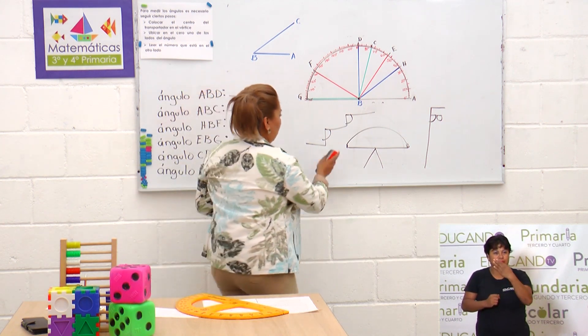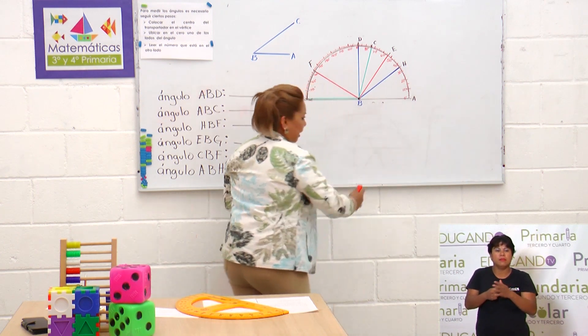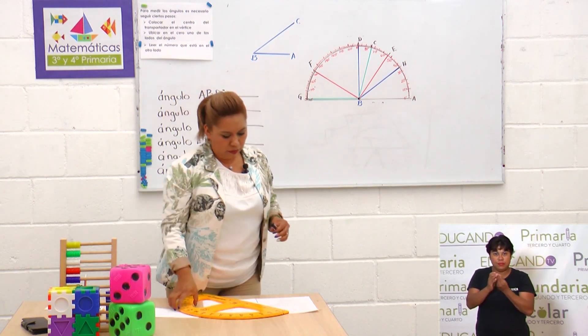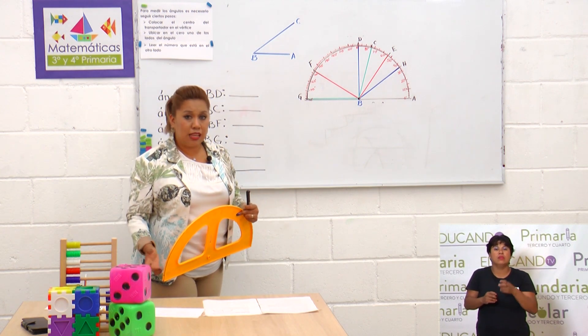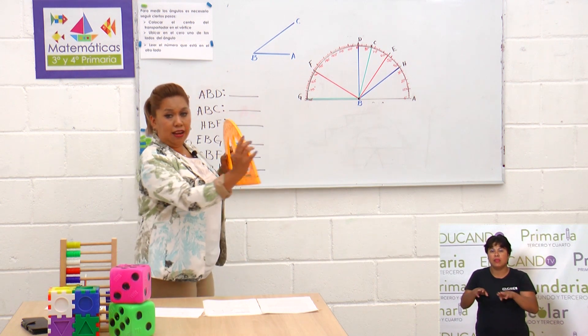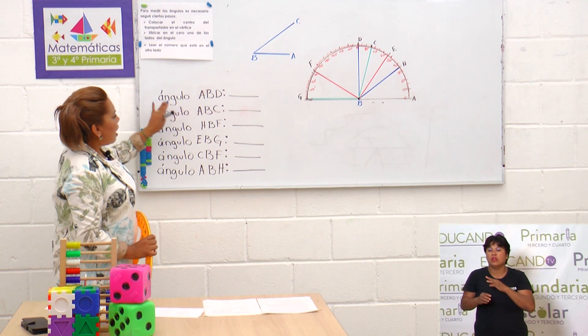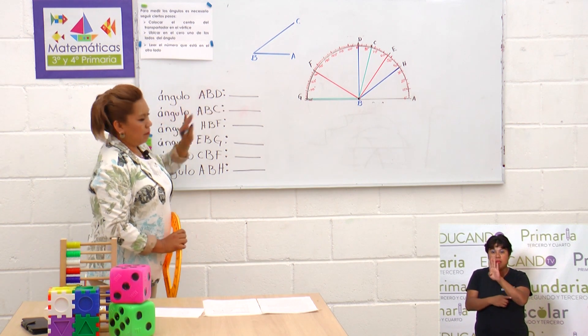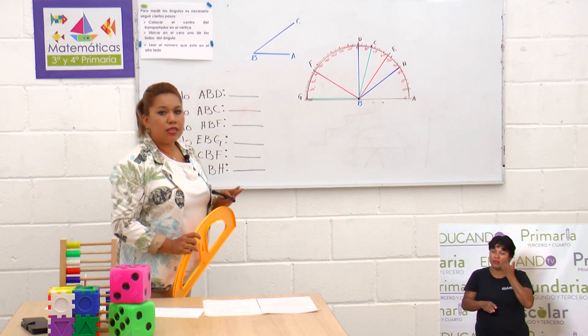Muy bien. Ahora bien, ¿qué vamos a realizar hoy? Como nuestra clase es de alguna manera medición de algunos ángulos con el transportador, pues eso vamos a hacer. Vamos a medir ángulos con el transportador. En este caso, nos piden que midamos el ángulo A, B, D.